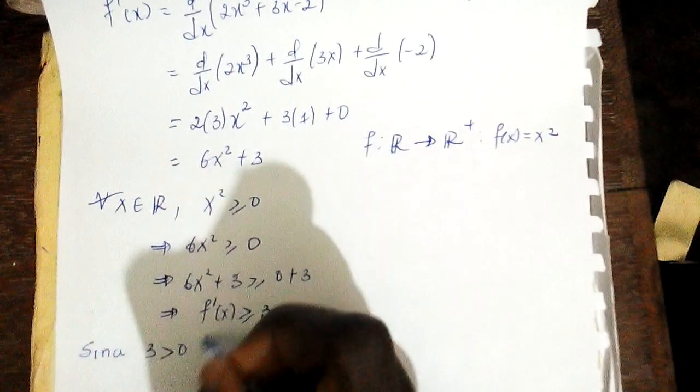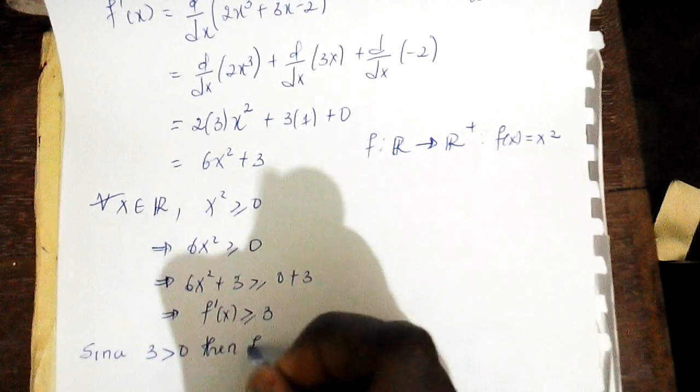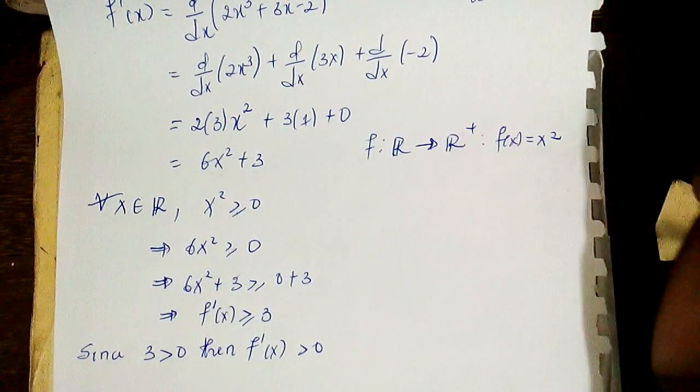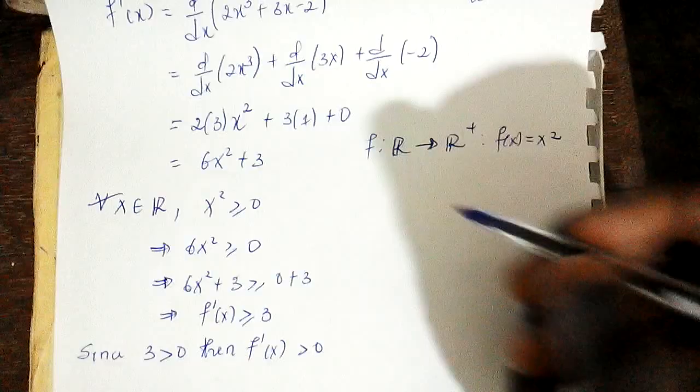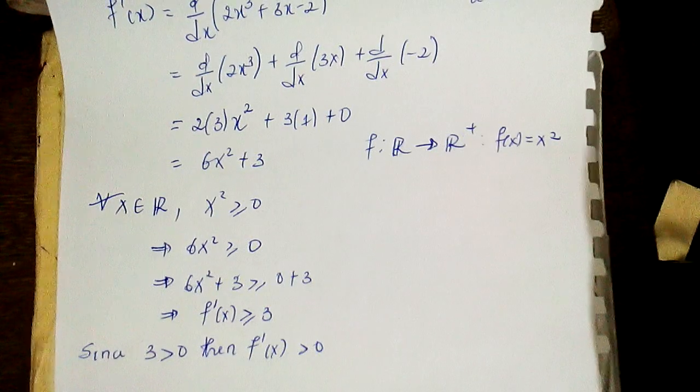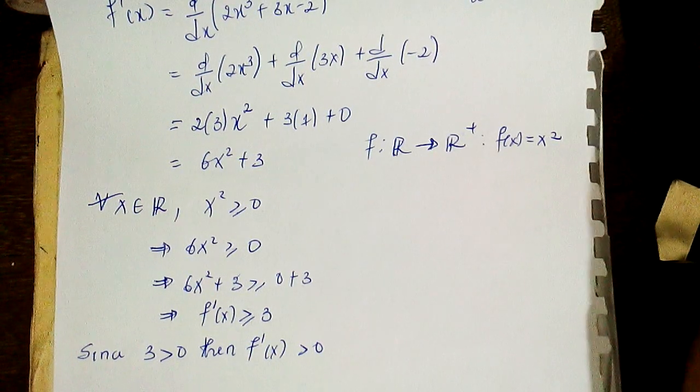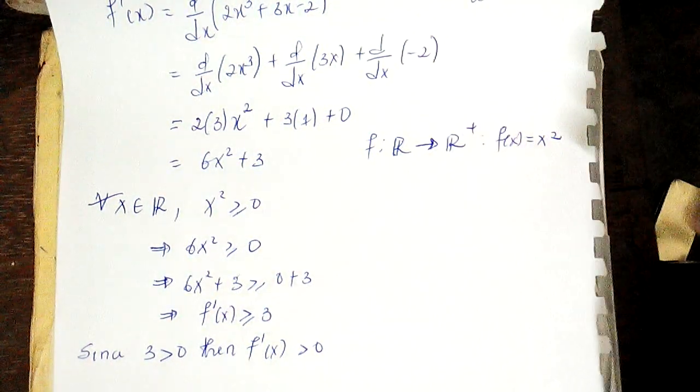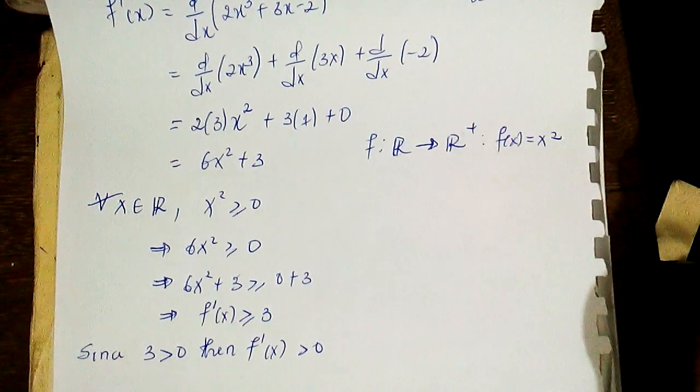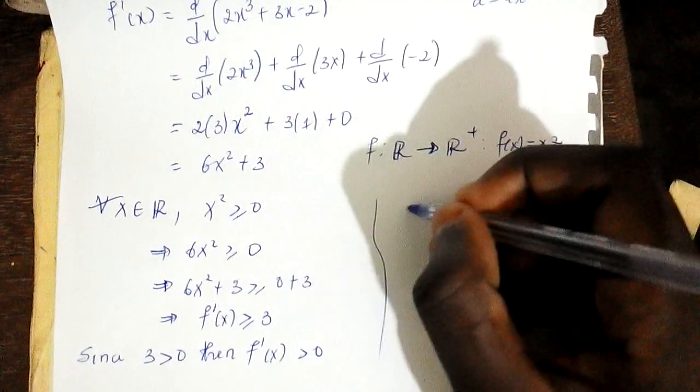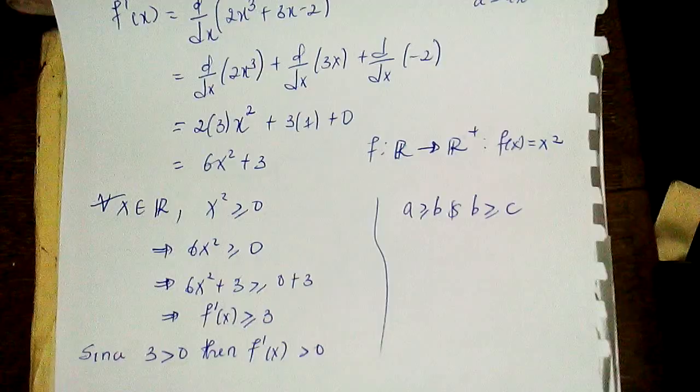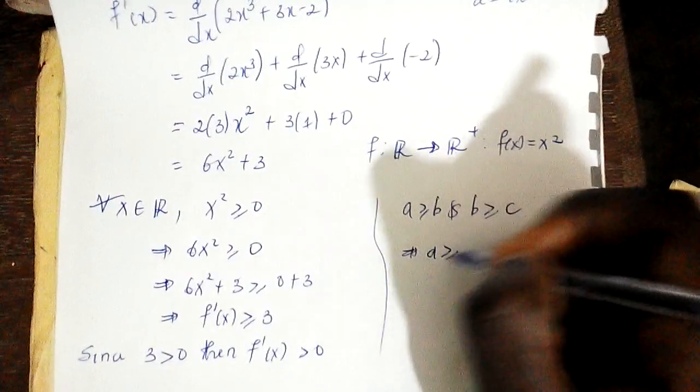This uses the transitive property. All relationships like greater than or equal to are specifically partial order relations, which are reflexive, anti-symmetric, and transitive. If you have a ≥ b and b ≥ c, then clearly a ≥ c.